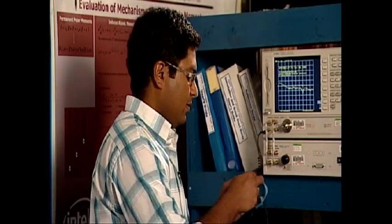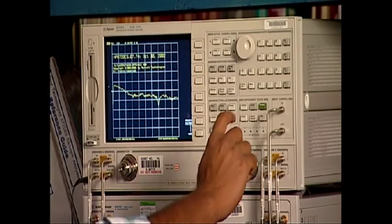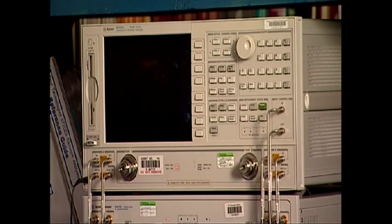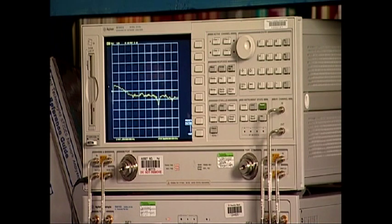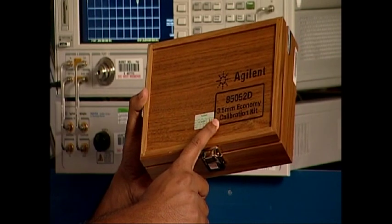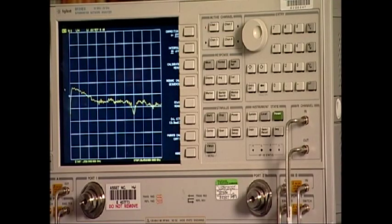We first need to connect and wear the grounding strap on our wrist. We then preset the VNA by pressing the preset button, which is under the instrument state block. The calibration kit we're using here is 85052d Agilent calibration kit.